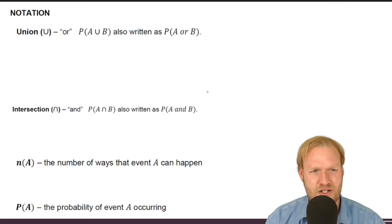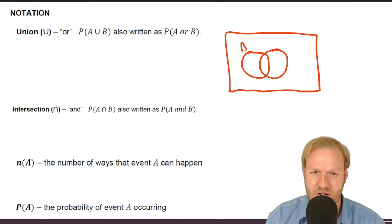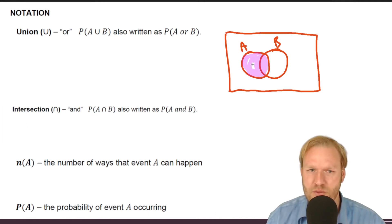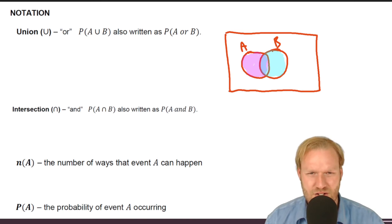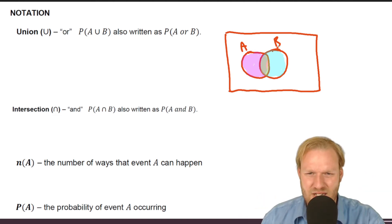Now for notation — how we write these. Let's draw a Venn diagram with an overlap, with events A and B. The union symbol means A or B, so we're looking for the probability of A happening or B happening. That includes both circles and the overlap in the middle.